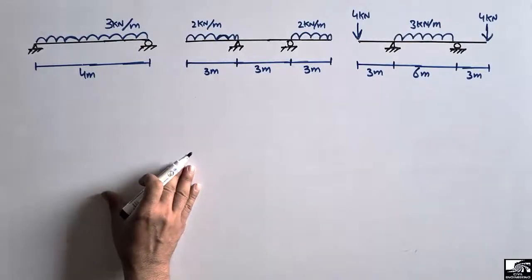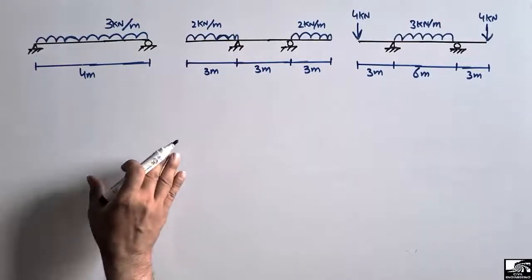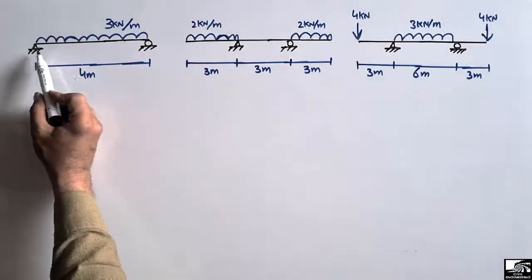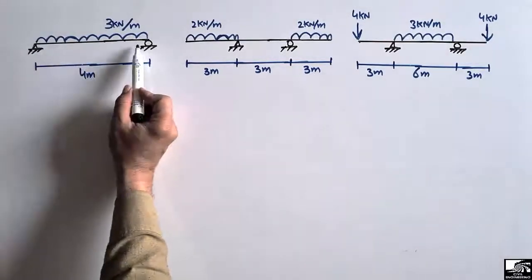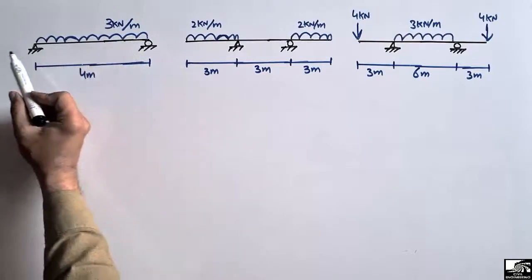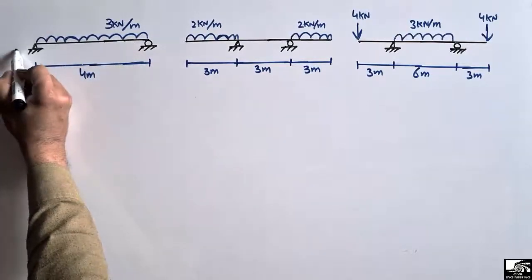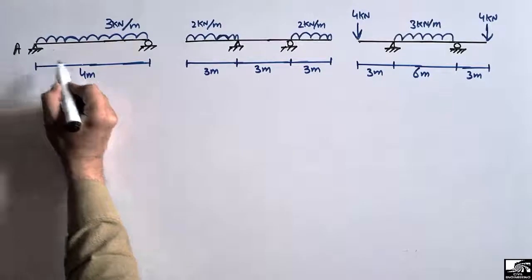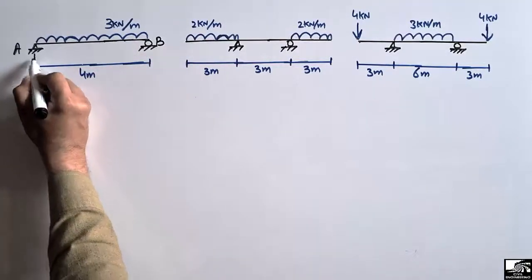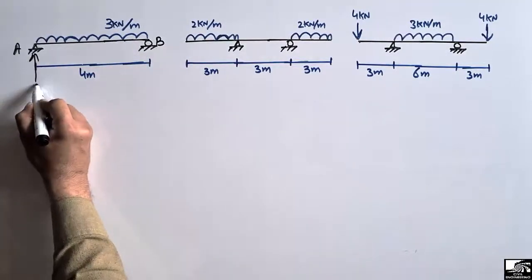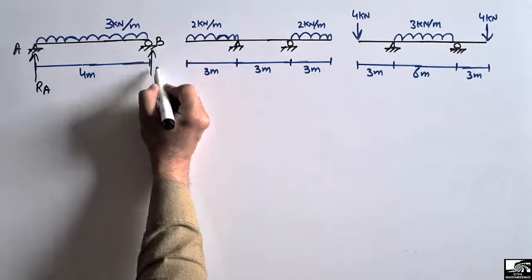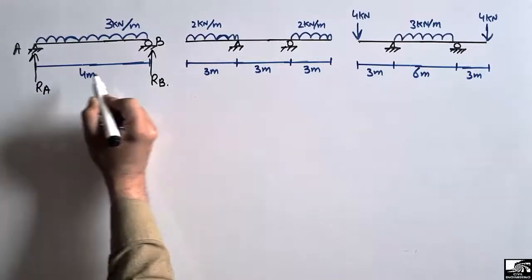First, start with this beam. This is a simply supported beam and there is a uniformly distributed load acting on this beam. Let's consider this as support A and this as support B. This support can resist the vertical loads, so RA and RB will be our reactions for this beam.